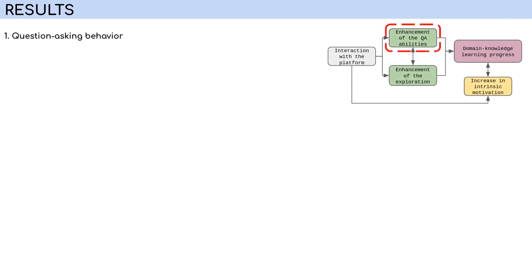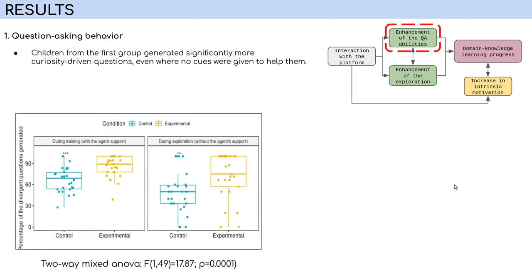For the results, we started by investigating the question-asking behaviors of children from the two different groups. Our results indeed showed a statistically better performance for children who had the propositions for knowledge gaps, both in terms of the number of curiosity-driven questions that they have asked during the training, when they had the agent support, and during the exploration when they did not have any support.